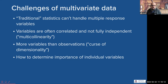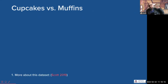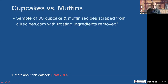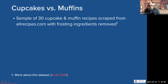Rather than struggle trying to give discipline-specific examples for every sub-discipline you mentioned, we're going to use a data set about cupcakes and muffins as an example. This is a sample of 30 cupcake and muffin recipes scraped from allrecipes.com. I've removed the frosting, of course, because frosting is a big difference between cupcakes and muffins. I want to answer the question: are cupcakes and muffins really different, or are muffins just an excuse to eat cake for breakfast?